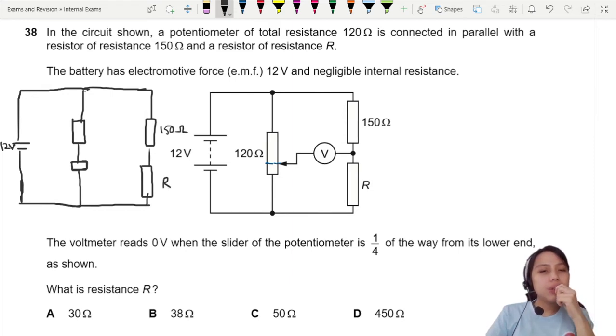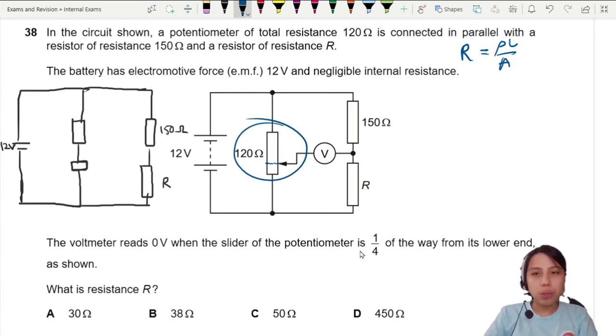This one down here is one quarter, right? In potentiometers, generally you can use R equals ρL over A. Usually this is a wire, so if it's the same material and cross section area, you can say R is proportional to L.